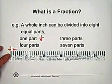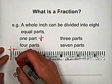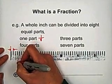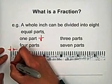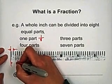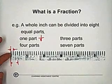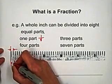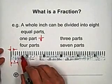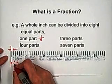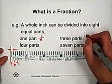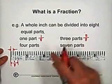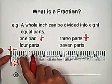If we select three parts — one, two, three — three are selected. How long is this segment? We have three parts selected, and the total is eight parts. So three over eight. The three parts can be expressed as three over eight inches.